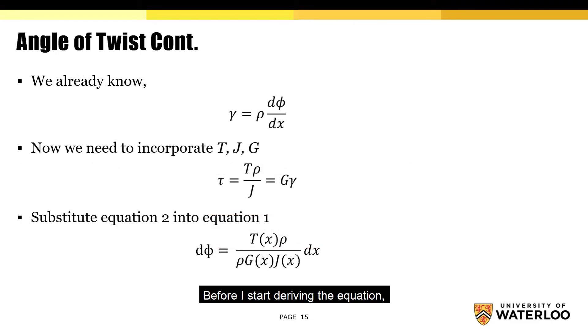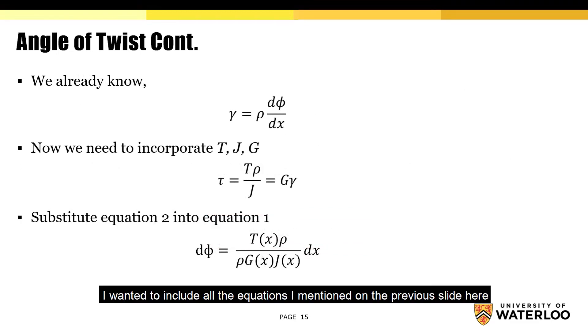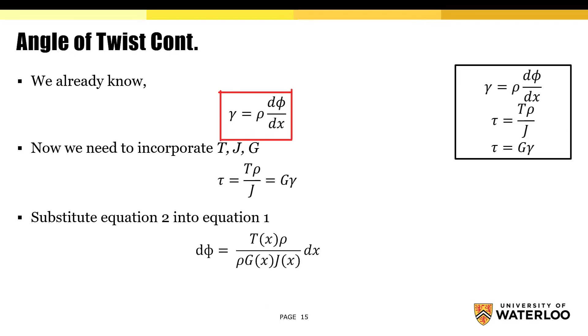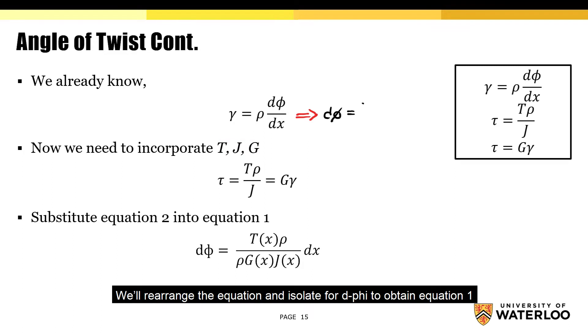Before I start deriving the equation, I wanted to include all the equations I mentioned on the previous slide here. The first thing we'll look at is the relationship between shear strain and the rate of change of phi. Since we want to solve for phi, we'll rearrange the equation and isolate for d phi to obtain equation 1.